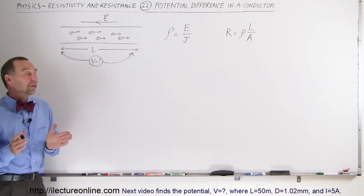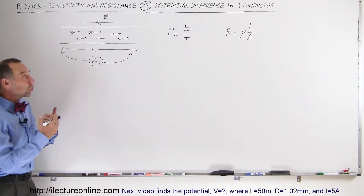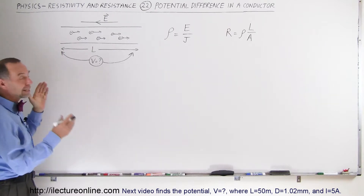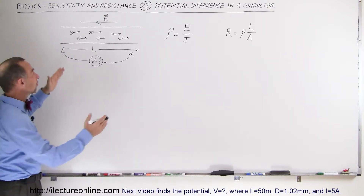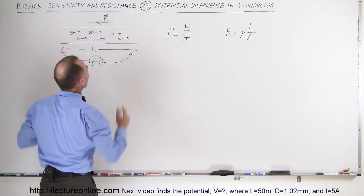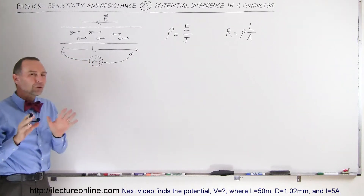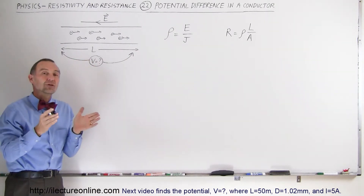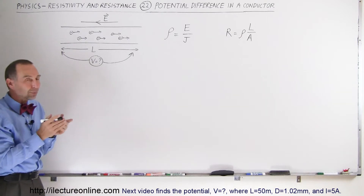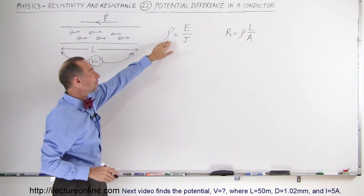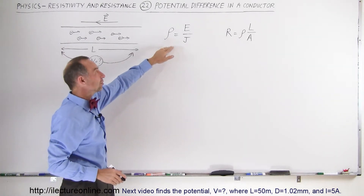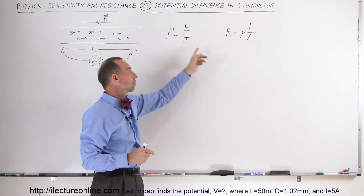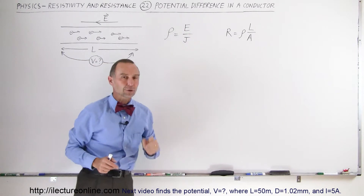Welcome to ElectronLine. In this video we're going to show you the relationship between a conductor carrying current and the potential difference between any two points on that conductor. We're going to do it in two ways: one way, we're going to show you the analogy to Ohm's Law, and the second one, we're going to use the definition of resistivity, which is equal to the ratio of the strength of the electric field applied to the conductor divided by the current density.